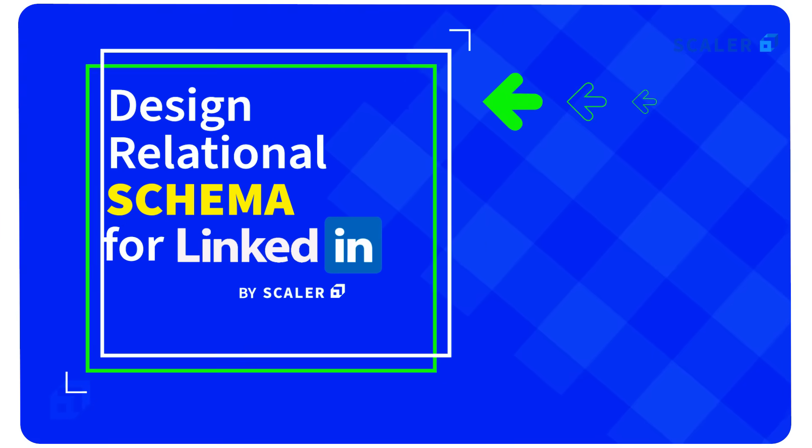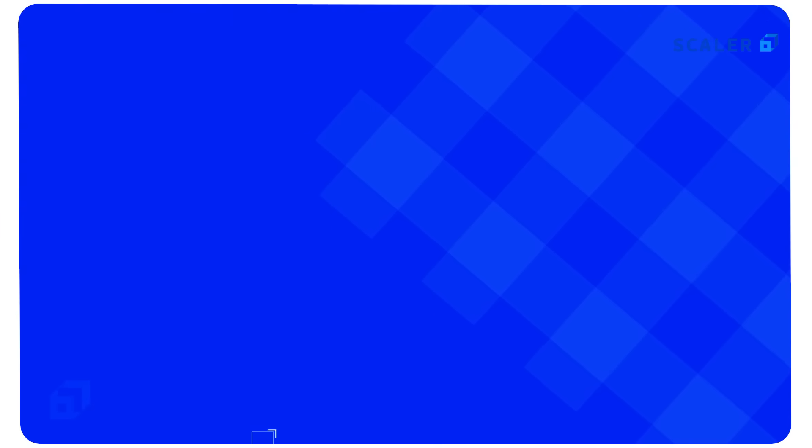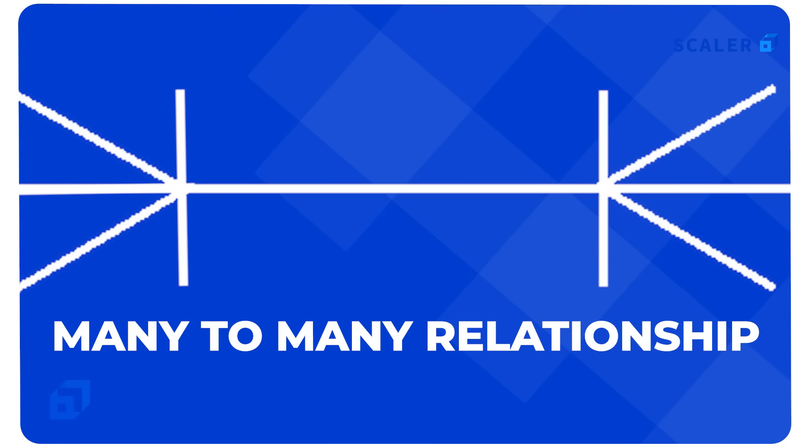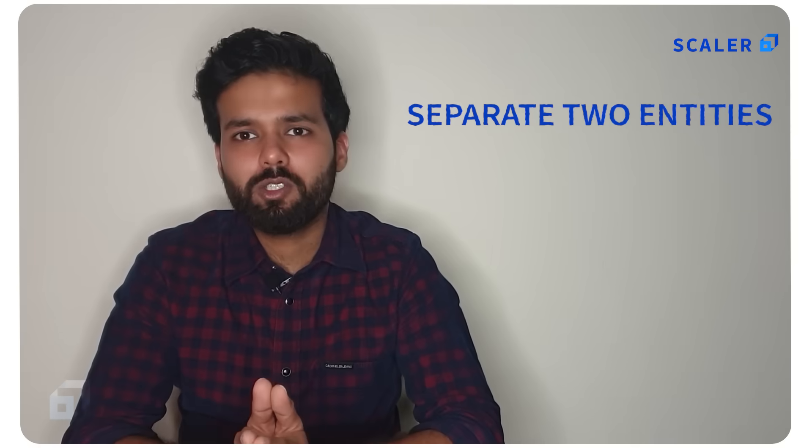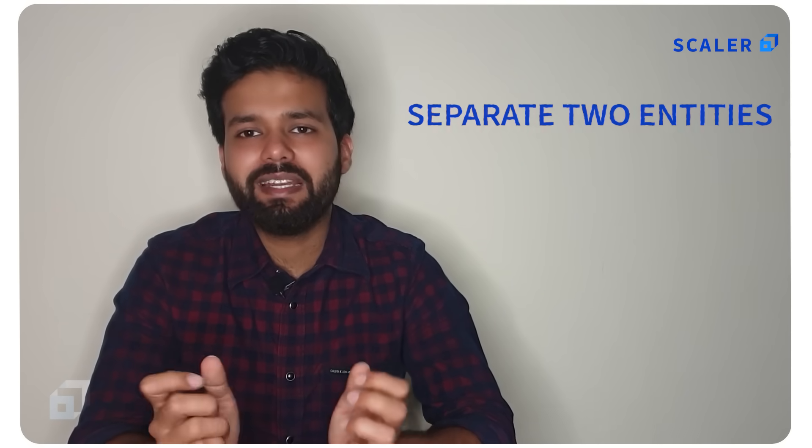If you are someone who often finds it difficult to convert real-world requirements into entity and relationship diagrams, then this video is for you. In this video, we're going to discuss relational schema design using LinkedIn as an example. We'll cover one-to-many relationships, many-to-many relationships, and when it makes sense to separate two entities even though the columns in both entities are the same. After this video, you'll be able to convert high-level requirements into relational database schema with ease.